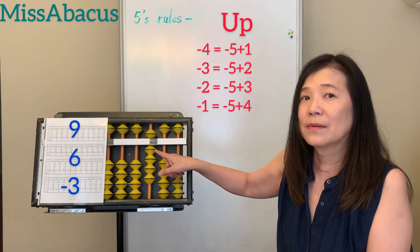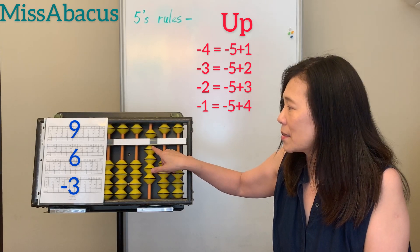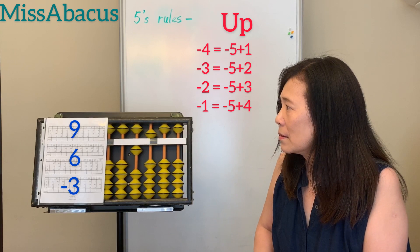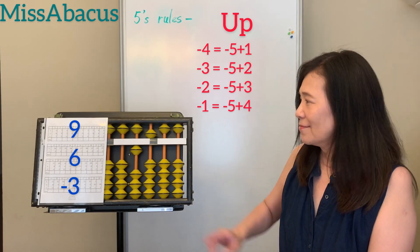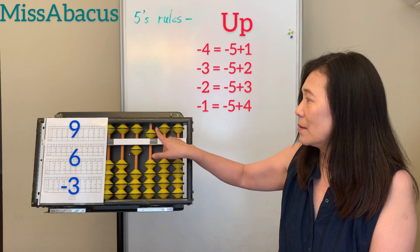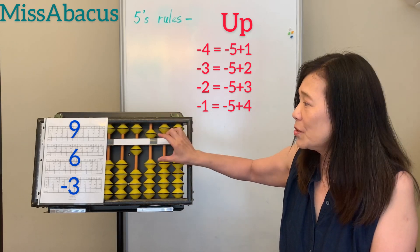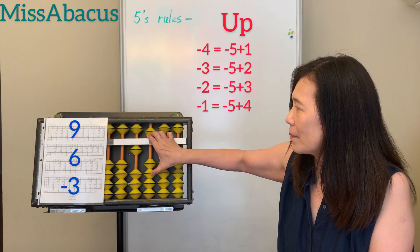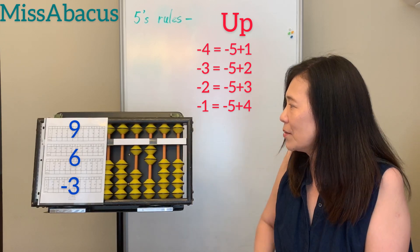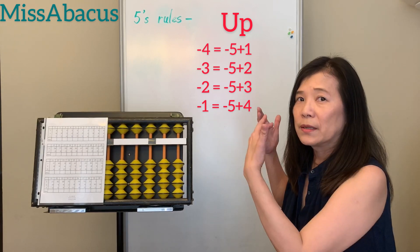Let's do number 5: 9 plus 6. Six's complement is 4, nothing left — of course apply the 10's rule. 6 is minus 4, plus 10. Then minus 3: nothing on the bottom, but you have 5. Up — so minus 3 is up 5, up 2. Answer: 12.